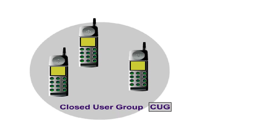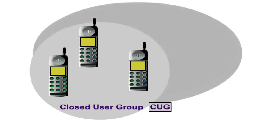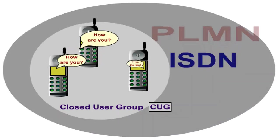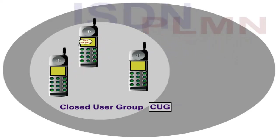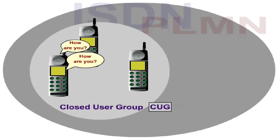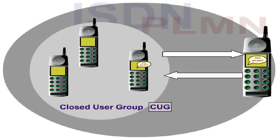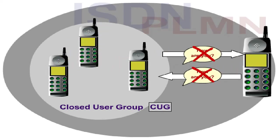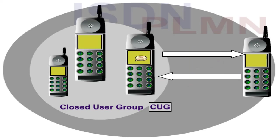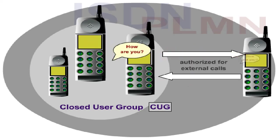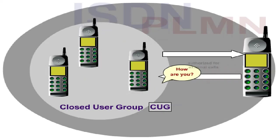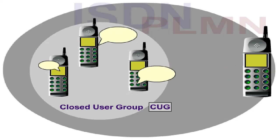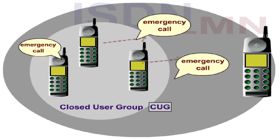Closed user group, CUG, gives a particular group of customers the opportunity to communicate with each other in PLMN or ISDN networks. The members of a closed user group can't communicate with subscribers outside the group. If desired, one or more subscribers in this group can be authorised to call subscribers outside or to receive calls from them. Emergency calls are not subject to the restrictions of this service.